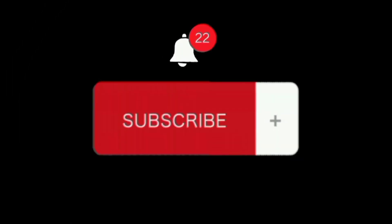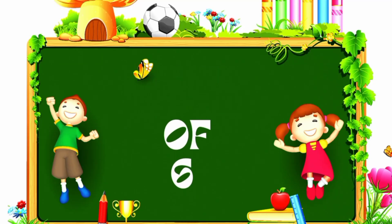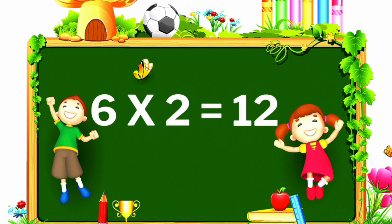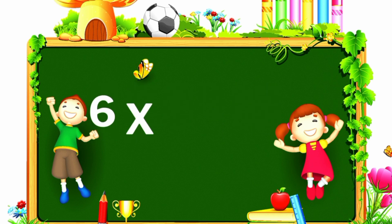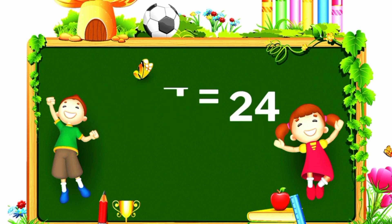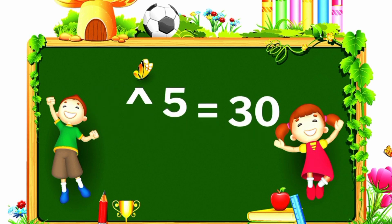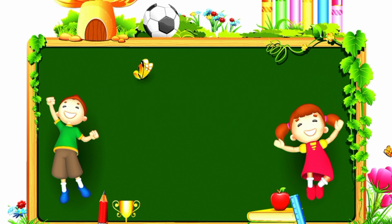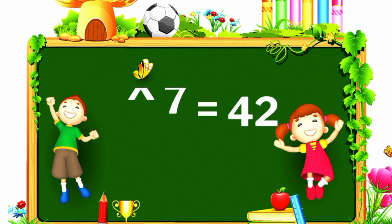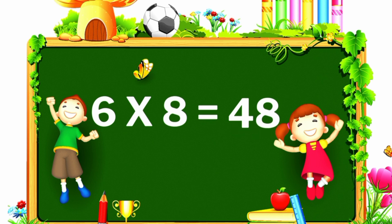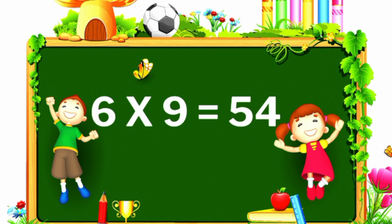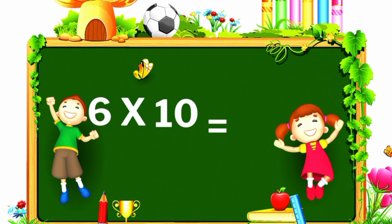Please like and subscribe. Table of 6. 6 ones are 6. 6 twos are 12. 6 threes are 18. 6 fours are 24. 6 fives are 30. 6 sixes are 36. 6 sevens are 42. 6 eights are 48. 6 nines are 54. 6 tens are 60.